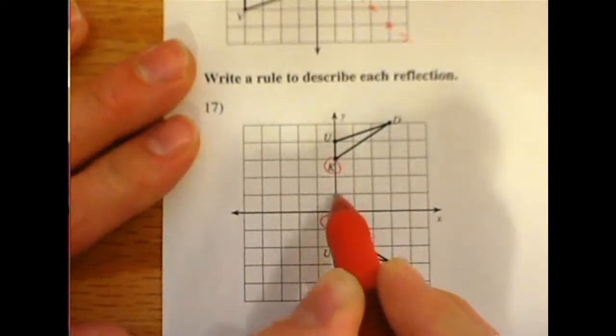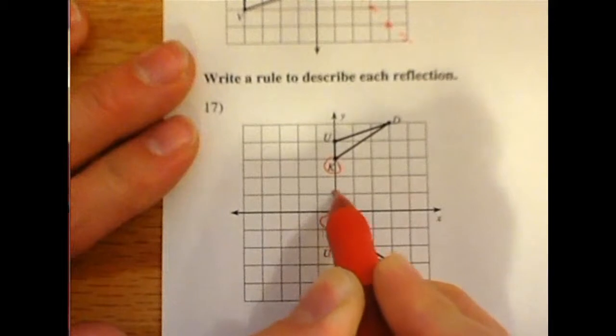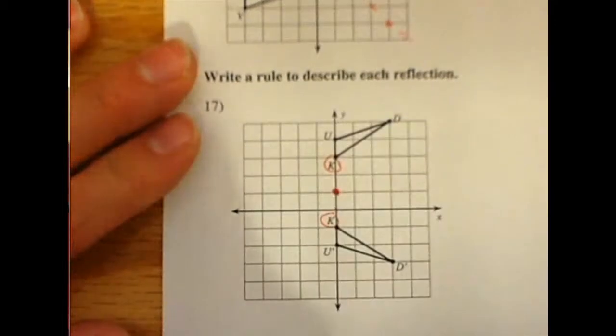So I go up 1, up 2, up 3, up 4. They're 4 apart. Halfway would be to be 2 apart from each other. So right there would be the halfway point.